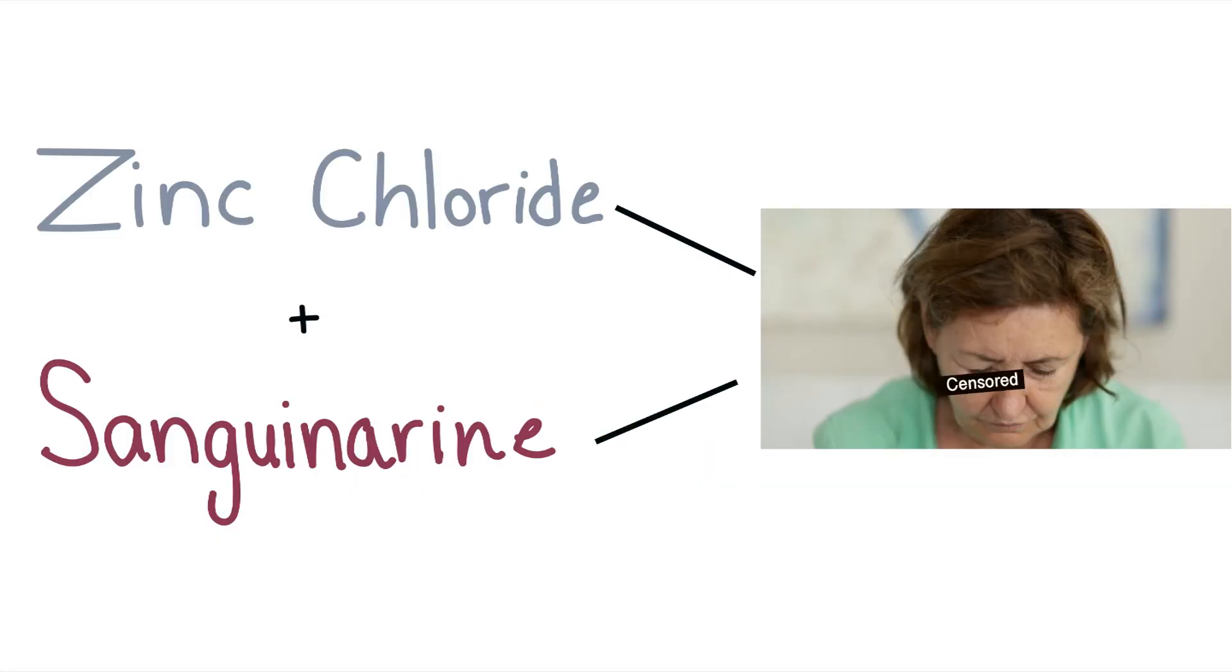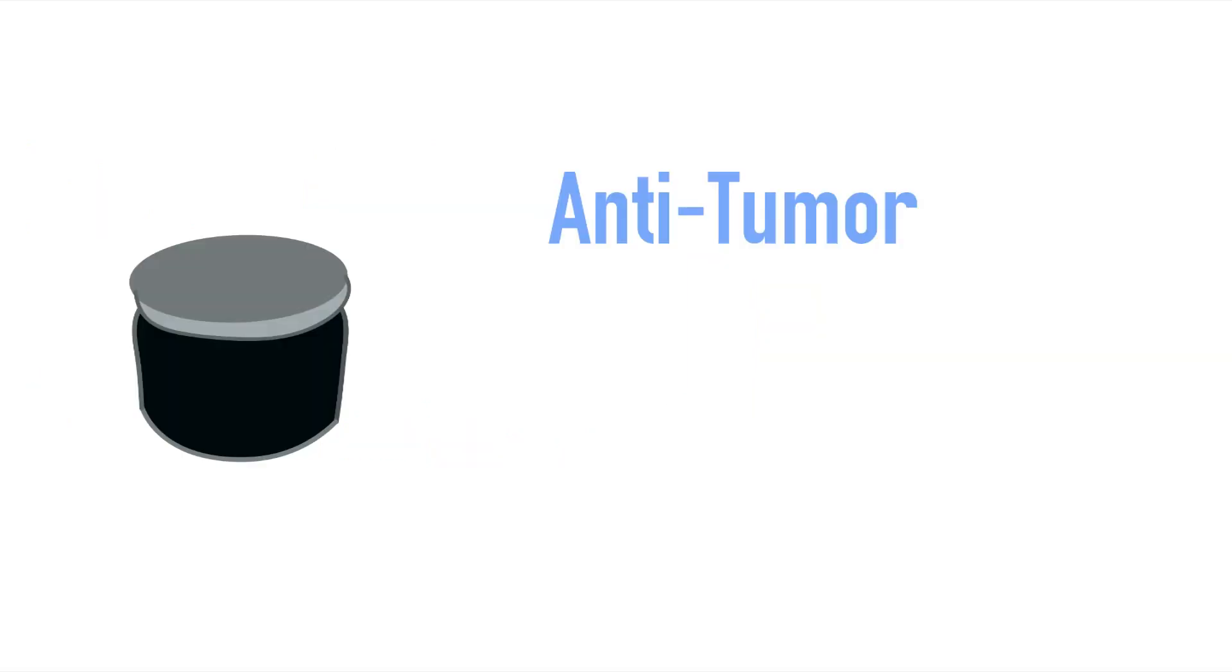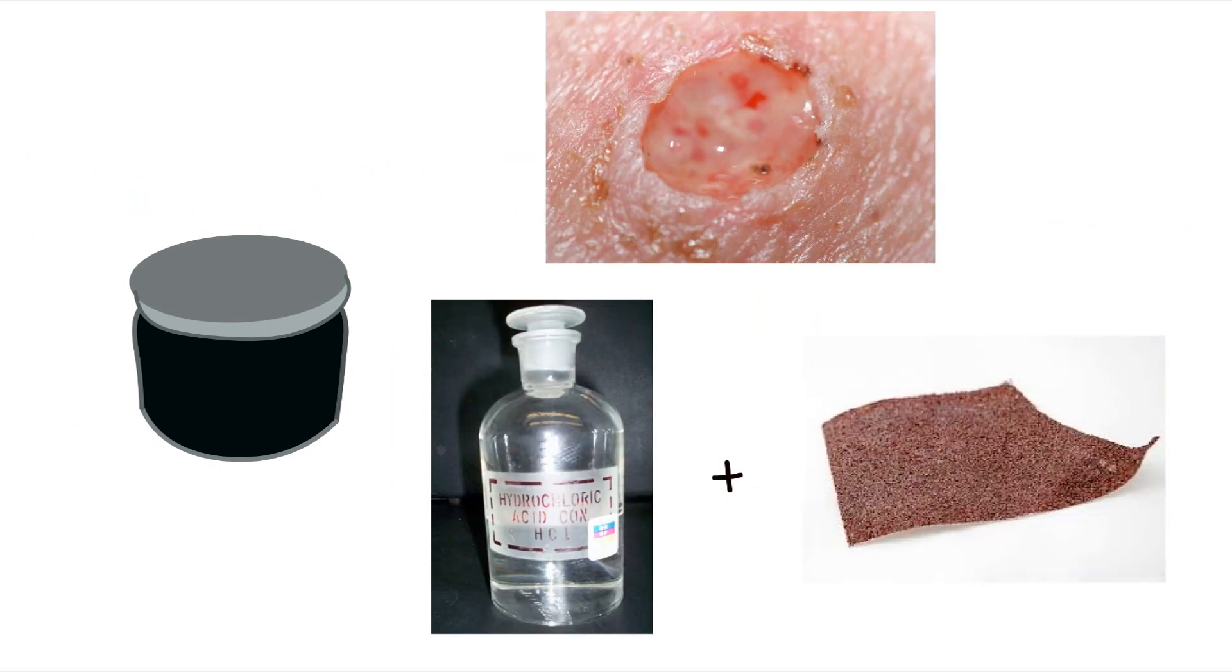In summary, the reason why black salve kills tumors is because it's formulated to kill any living tissue it comes in contact with. It's not an anti-tumor treatment, it's a pro-necrotic agent. Using black salve is no different than removing a tumor with hydrochloric acid and sandpaper.